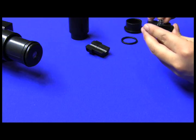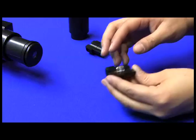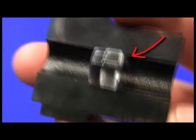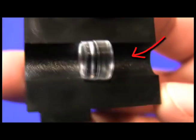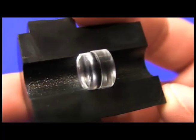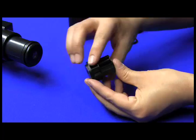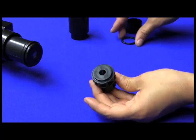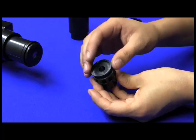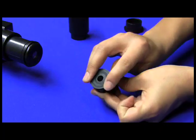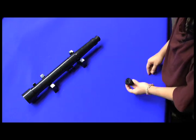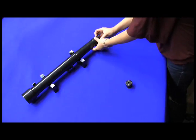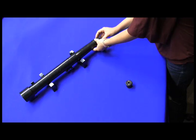For this one, make sure the flat side points toward the bigger end of the eyepiece. Put the top on. It's held together with a small black ring, then the other piece goes right on. Remove the Keplerian eyepiece and replace it with the Galilean.